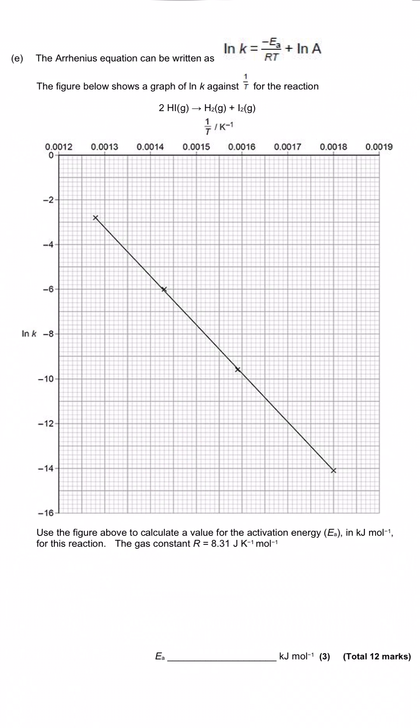The Arrhenius equation can be written as ln K equals negative Ea divided by RT plus ln A, where K is the rate constant and A is the Arrhenius constant. The figure shows a graph of ln K against 1/T for the reaction 2HI(g) → H₂(g) + I₂(g). We've got 1/T on the x-axis in Kelvin⁻¹ because temperature is on the bottom of the term.